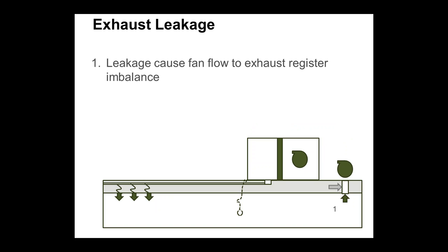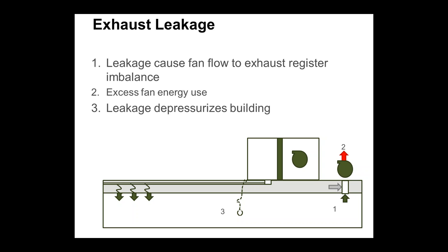Exhaust systems can cause exhaust register imbalance — you won't get the right airflow from each space. Balancing means speeding up the fan and balancing down registers, but a lot of that air gets sucked in from wall cavities or ceiling plenums where supply ductwork also runs, causing short-cycling. It definitely causes excessive fan energy use and helps depressurize the building, which is undesirable. Negative building pressure causes moisture intrusion and additional infiltration load.